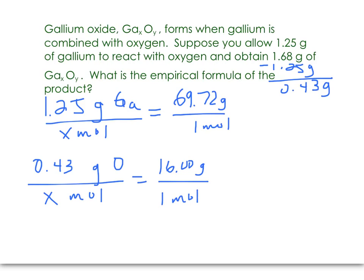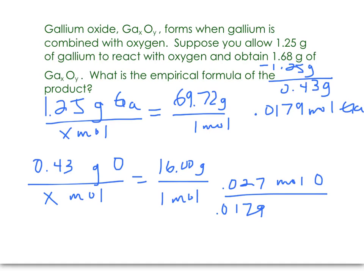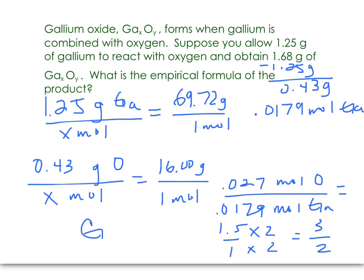Now we need to convert the mass of each element to moles so we can compare the number of moles and come up with the subscripts. Gallium gives us 0.0179 moles of gallium, and oxygen gives us 0.027 moles of oxygen. Taking the larger and dividing by the smaller does not give us a whole number ratio — it's a 1.5 to 1 ratio again. So we double it to get a 3 to 2 ratio: 3 oxygens for every 2 galliums. Therefore, our empirical formula is Ga2O3.